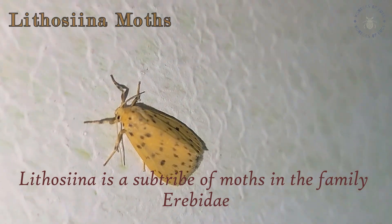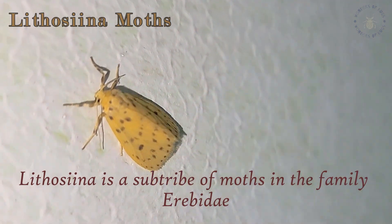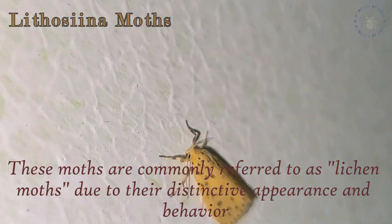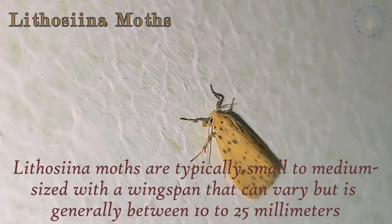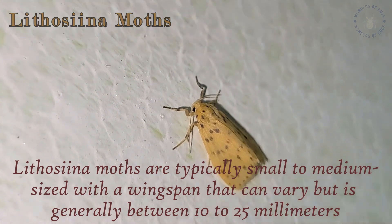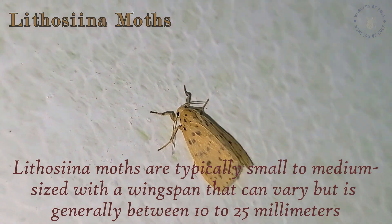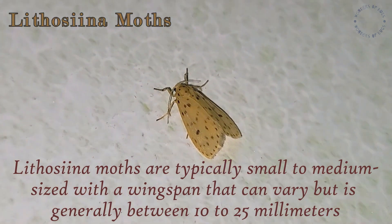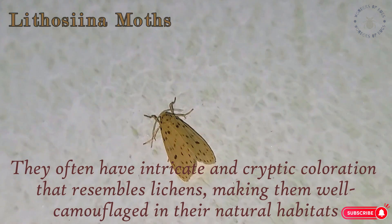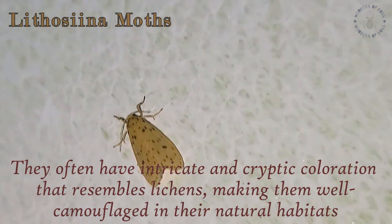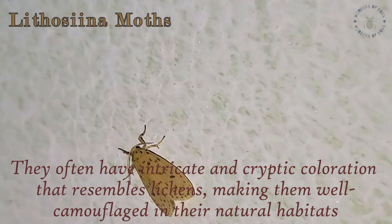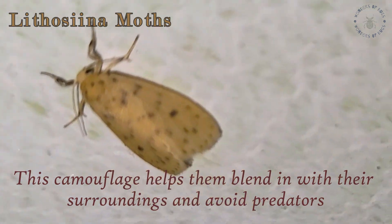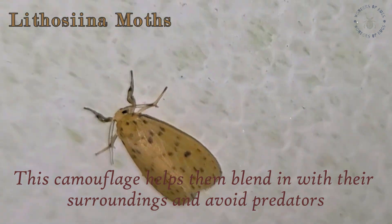Lithosiina is a sub-tribe of moths in the family Erebidae. These moths are commonly referred to as lichen moths, due to their distinctive appearance and behaviour. Lithosiina moths are typically small to medium-sized with a wingspan that can vary but is generally between 10 to 25 mm. They often have intricate and cryptic colouration that resembles lichens, making them well camouflaged in their natural habitats. This camouflage helps them blend in with their surroundings and avoid predators.